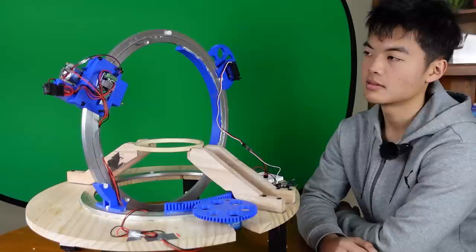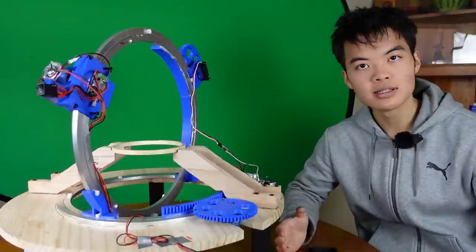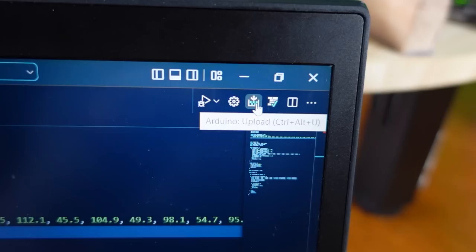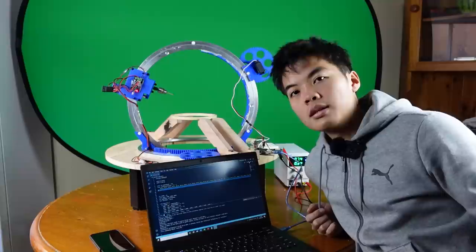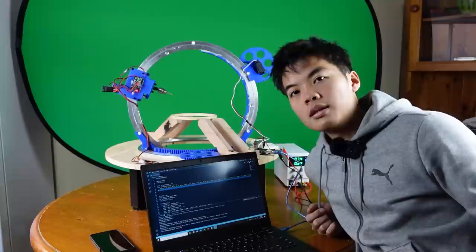The Sculpteur de Melon 3000. Yeah, I look like a terrorist, don't I? Anyways, this robot only requires 4 steps to get up and running. Step 1, turn on the power. Step 2, upload the thing. Step 3, activate the piston. And Step 4, pray to whatever higher power you believe in that it works while watching it do its thing. Yeah, so I haven't tested it yet, but it's about time.